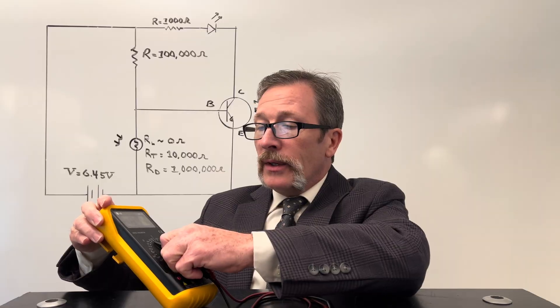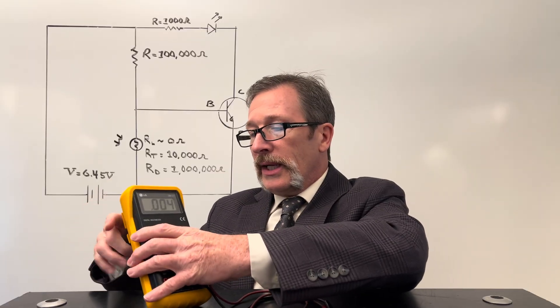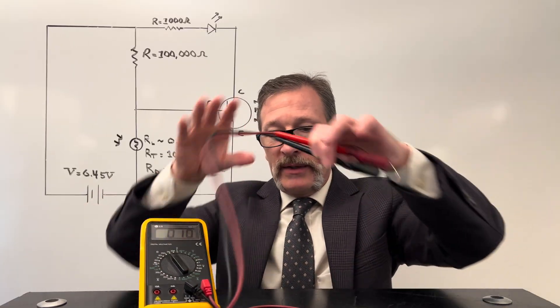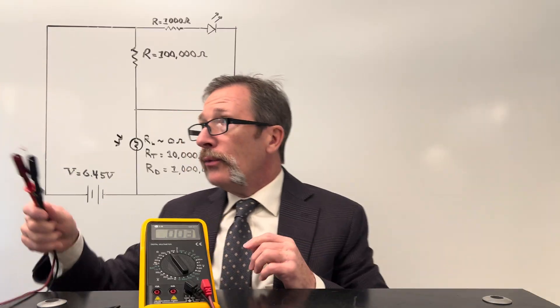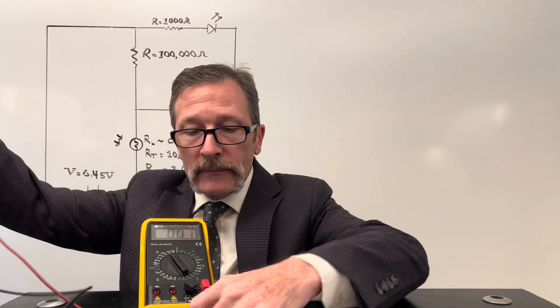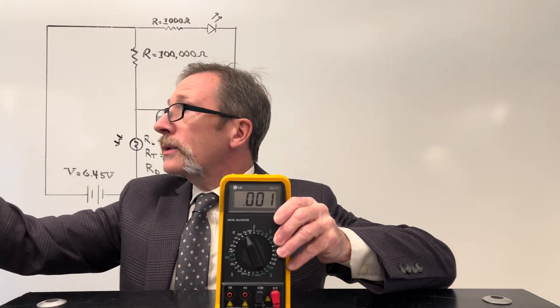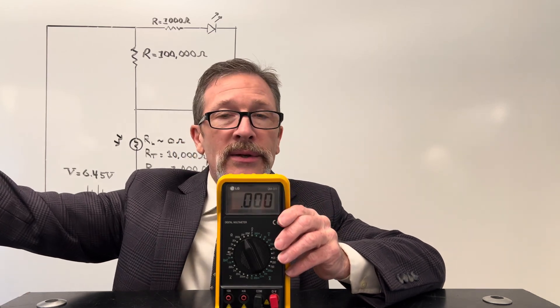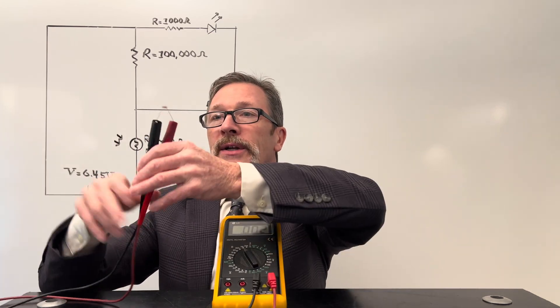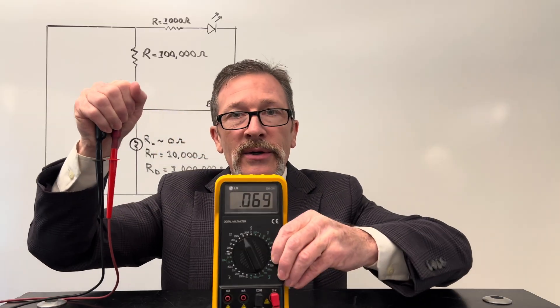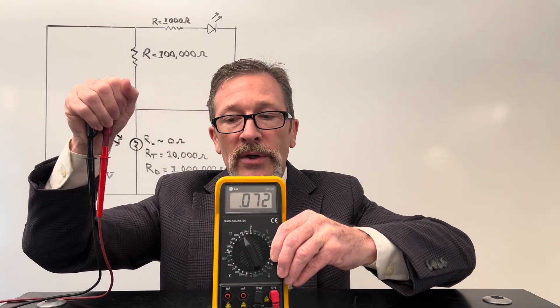I'm going to put my ohmmeter on the 2 million scale. When I put this in the light or near a light source you'll notice that it goes nearly down to zero ohms. However if I were to cover it completely it starts to approach millions of ohms.